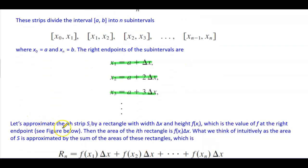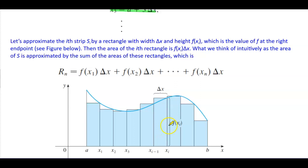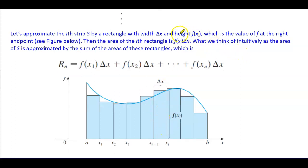We approximate the i-th strip S subscript i by a rectangle with width delta x and height f of x subscript i, which is the value of f at the right endpoint. As shown in the figure, the height represents the output of x subscript i, and the width of the rectangle is delta x.